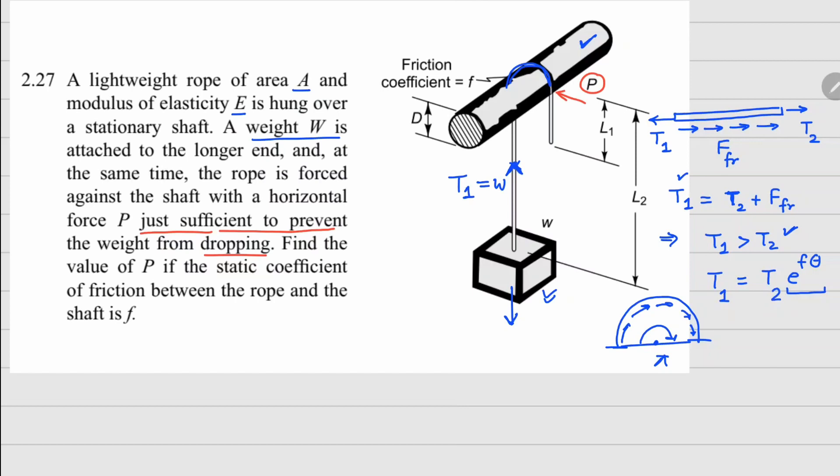Many times you will see this relationship can also be written as T₂ equals T₁ e to the power minus f theta. That's why it's always good to look at the free body diagram and see which tension is going to be higher, which tension is going to be lower, and you can use your relationship according to the values of tension.